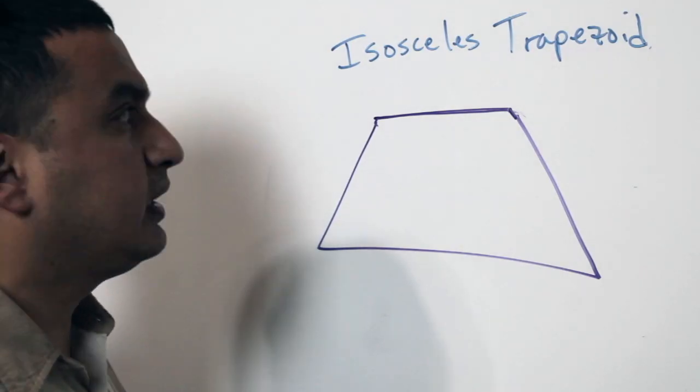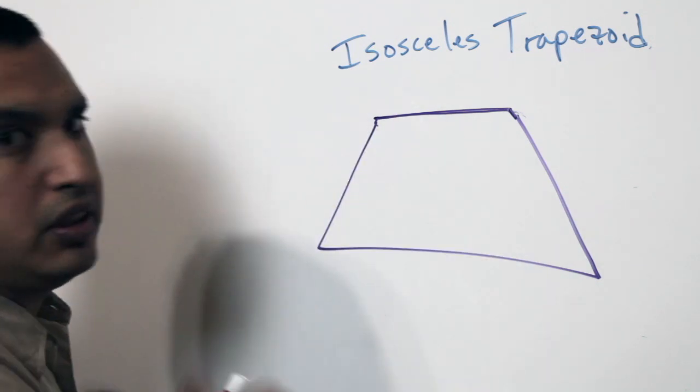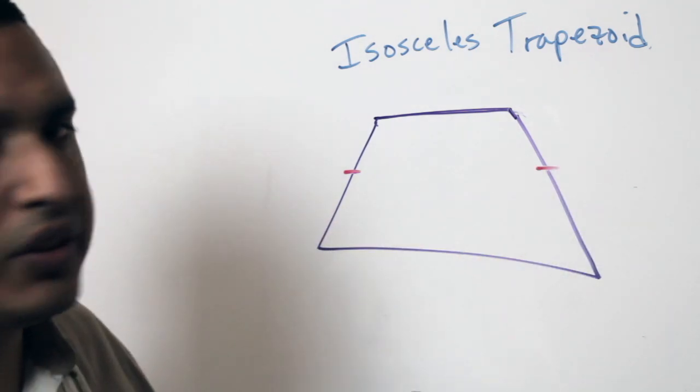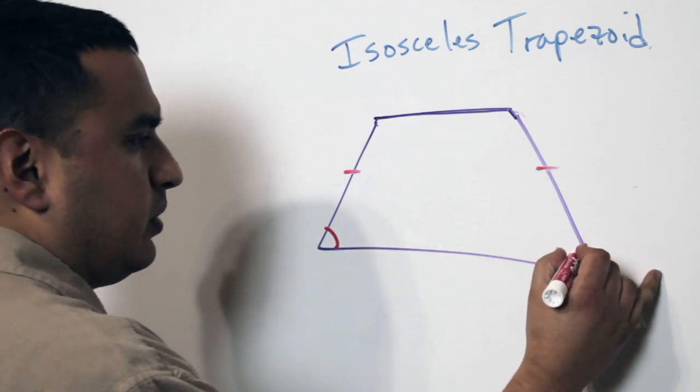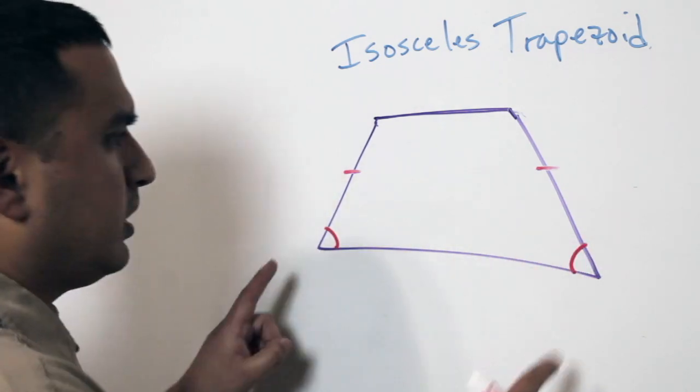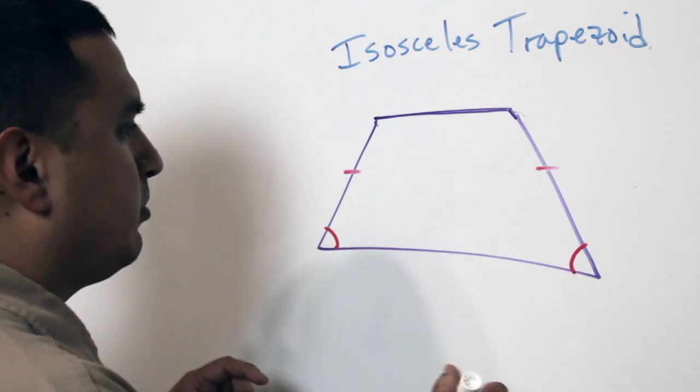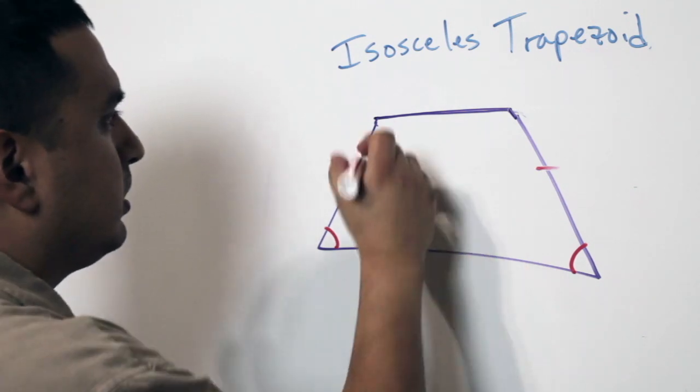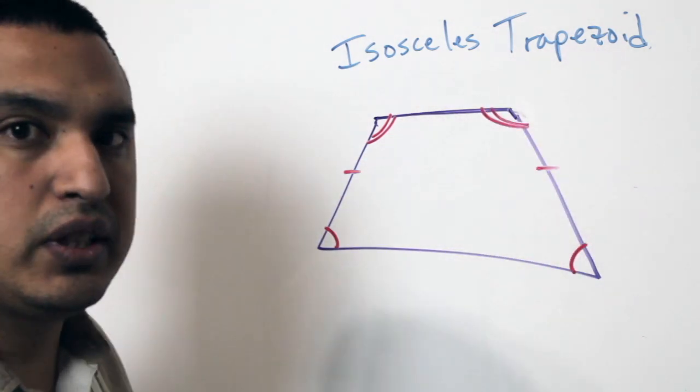All right, so things you should know about an isosceles trapezoid. Other than, of course, obviously, if it's an isosceles trapezoid, like we talked about earlier with the definition, you know that the legs are congruent. But what also happens is that the base angles are congruent. So if I tell you you have an isosceles trapezoid, that should automatically trigger in your brain that you have actually two pairs of congruent base angles. So you'll know these bottom two are congruent, and then you would know these top two are congruent to each other.